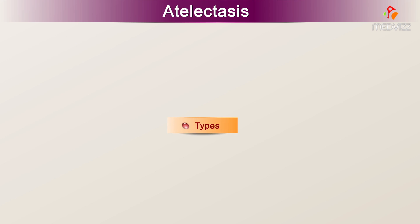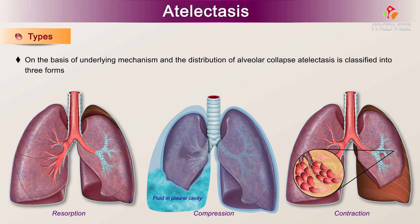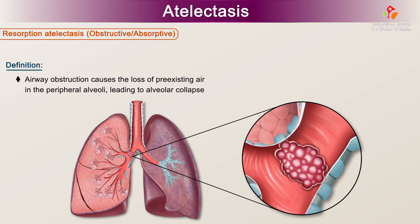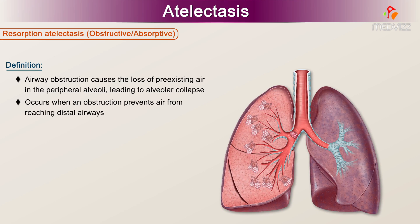Types of Atelectasis. On the basis of underlying mechanism and the distribution of alveolar collapse, atelectasis is classified into three forms. The first is Resorption Atelectasis, also called Obstructive or Absorptive Atelectasis. Airway obstruction causes the loss of pre-existing air in the peripheral alveoli leading to alveolar collapse. Resorption atelectasis occurs when an obstruction prevents air from reaching distal airways.